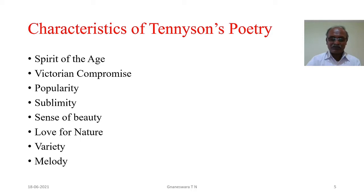Love for Nature: Tennyson had a great love for nature, different from Wordsworth's. For him, nature is the symbol of humanity with all those values and virtues associated with it, and his poems portray the beautiful aspect of nature vividly. Variety: Tennyson wrote lyrics, ballads, elegy, epic, and more on a wide range of subjects. Melody: Tennyson's poetry is known for sweet melody and lyrical qualities.